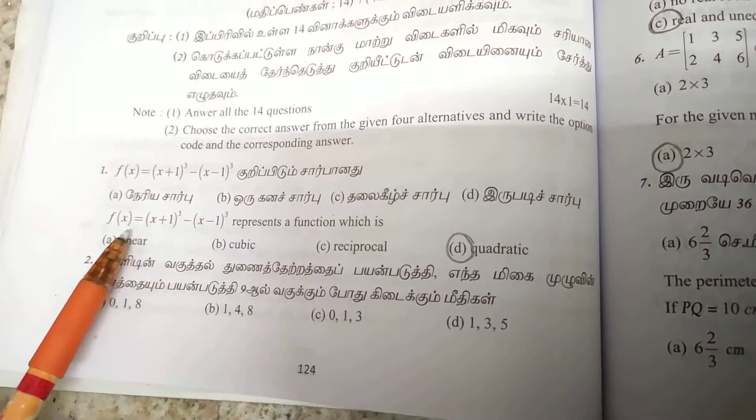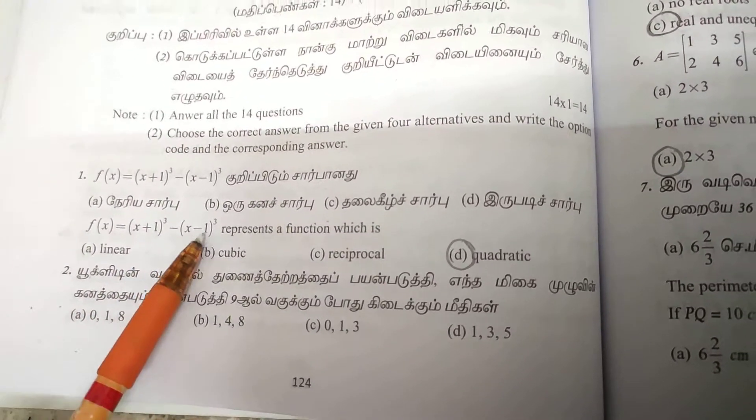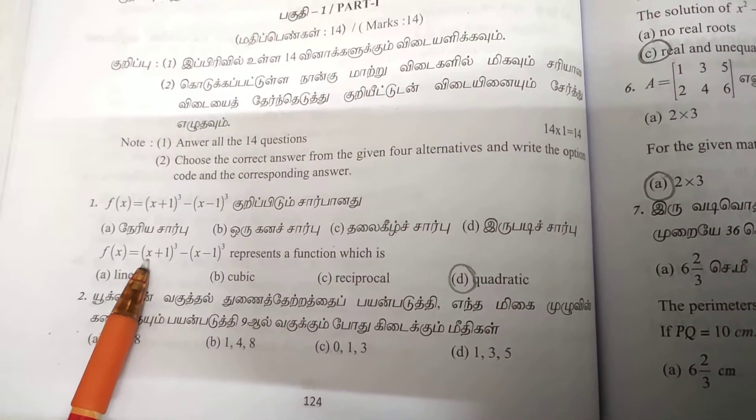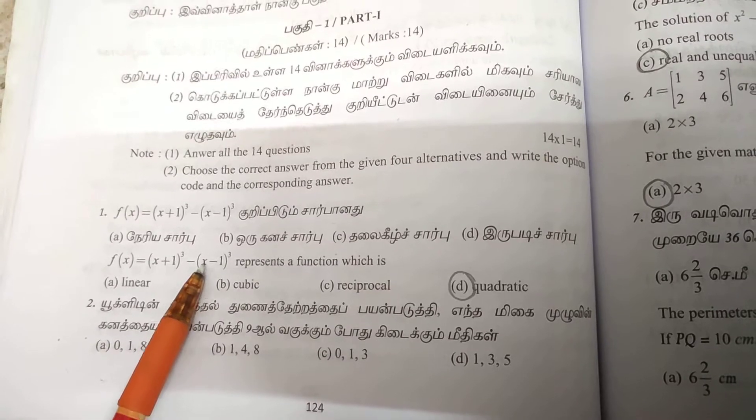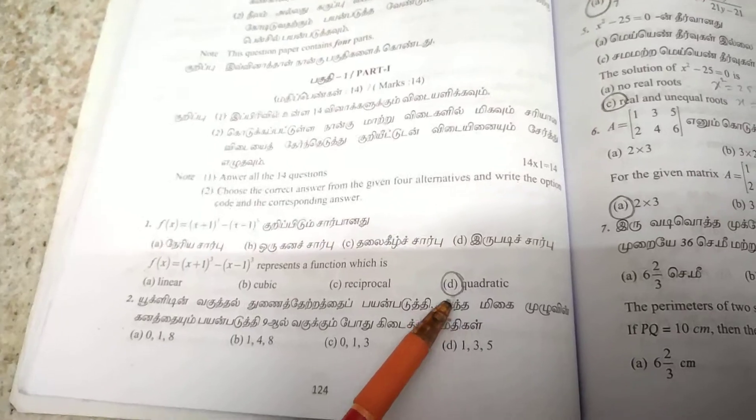First one is a book question. f(x) equals (x+1)³ minus (x-1)³ represents a function. When expanded, x³ and minus x³ cancel, leaving the square terms remaining. So the function represents a quadratic.